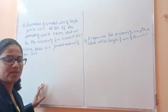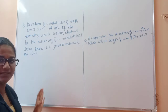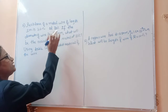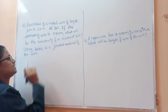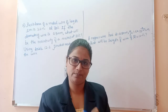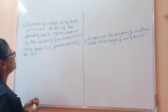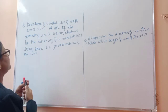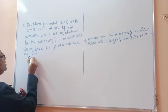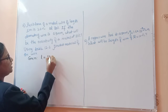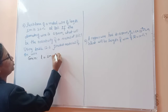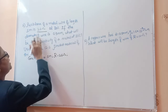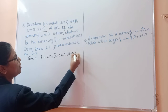The first problem: resistance of a metal wire of length 1 meter is 26 ohm at 20 degrees Celsius. If the diameter of the wire is 0.3 millimeter, what will be the resistivity? Given: L = 1 meter, R = 26 ohm, diameter = 0.3 millimeter.